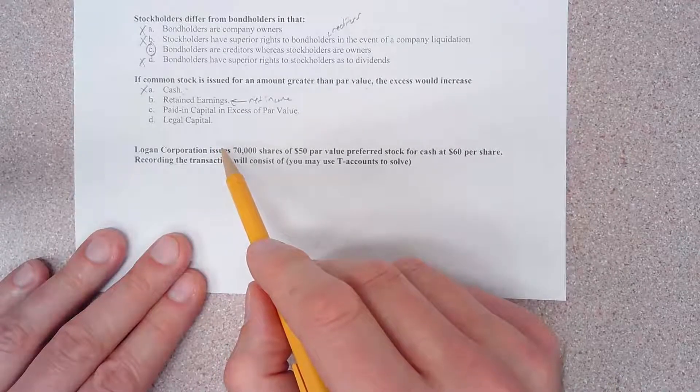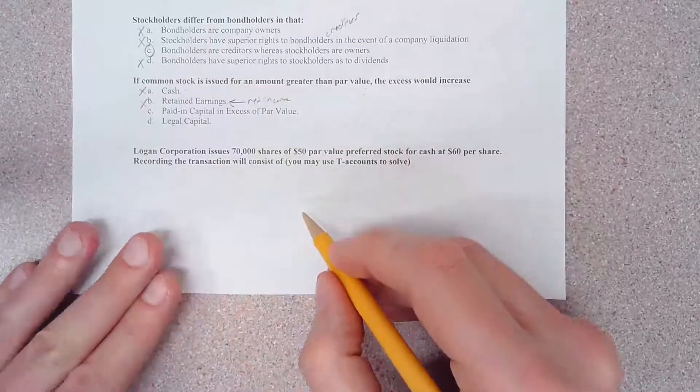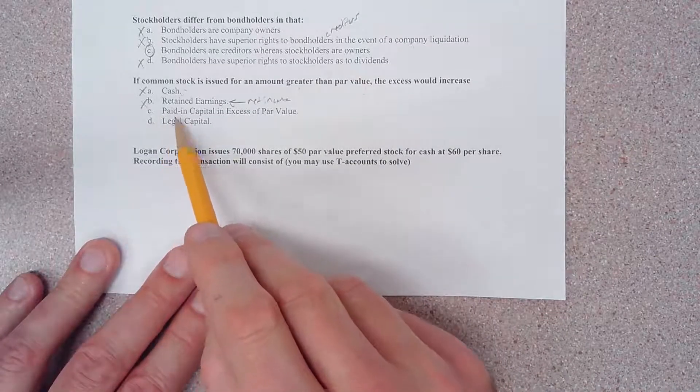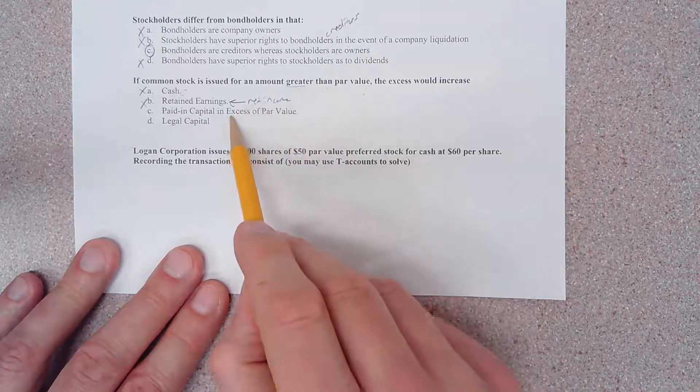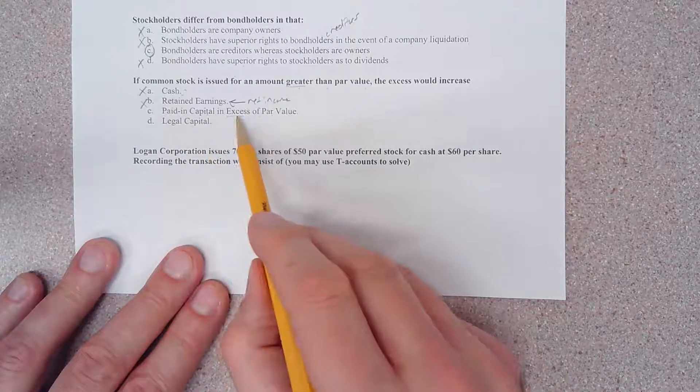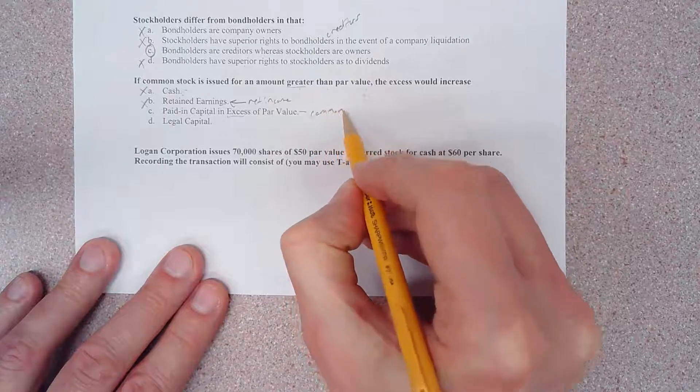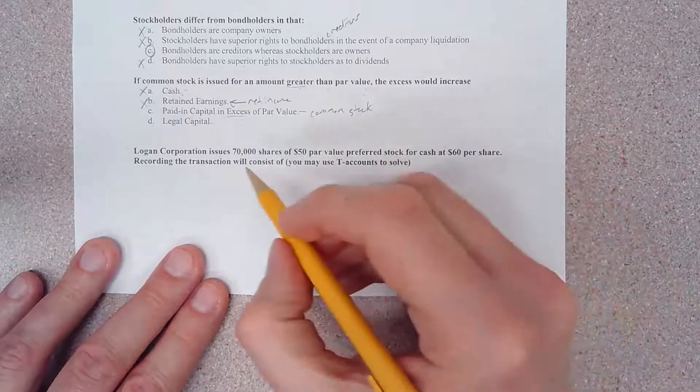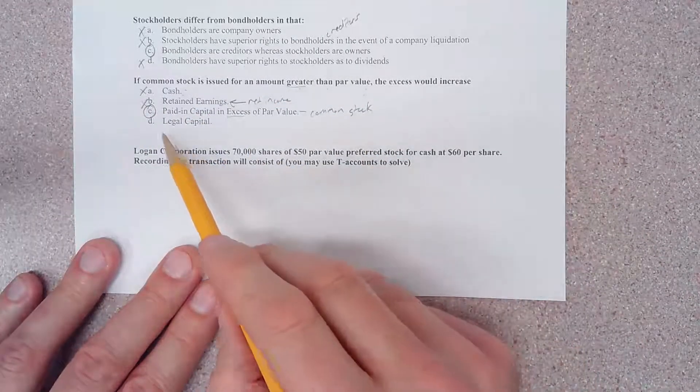Choice C, paid in capital in excess of par. Greater than, excess - see the connection there? So paid in capital in excess of par value, or common stock to be more specific, is going to be our correct answer.